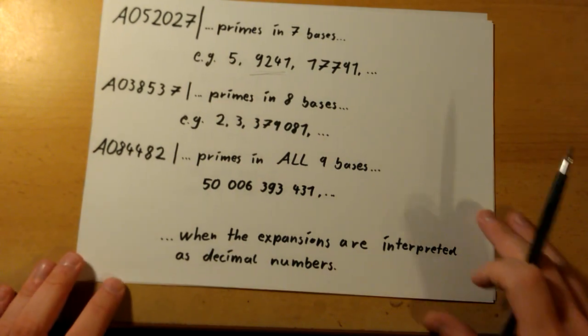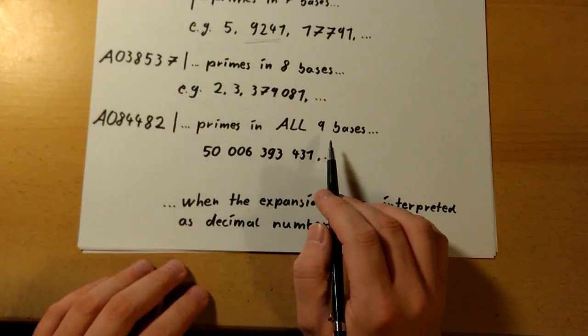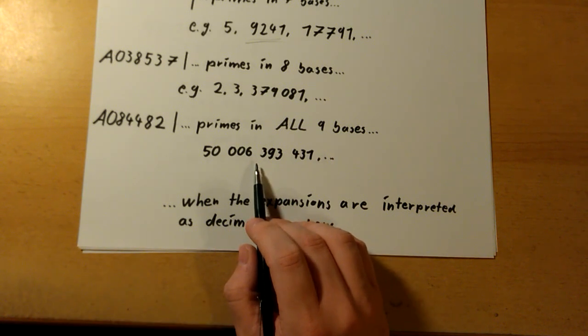And upon looking more, I found this sequence: primes in eight bases, nearly there. And then I found this one: primes in all nine bases. And this is a massive number, above one million.